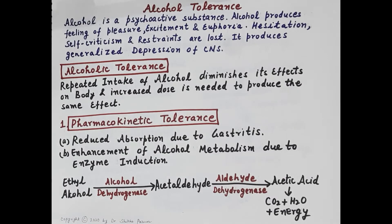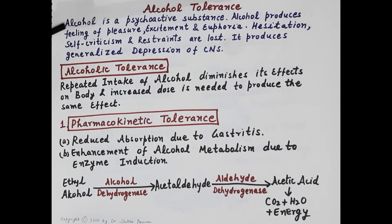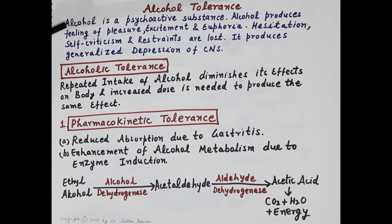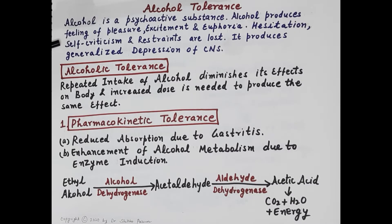Hello students, today we will talk about alcohol tolerance. Alcohol is a psychoactive substance. When alcohol is consumed as per recommendations — not more than one standard drink per day for women and not more than two standard drinks per day for men — it produces a blood alcohol content of 30 to 60 milligrams per deciliter. This limited consumption produces feelings of pleasure, excitement, and euphoria; hesitation, self-criticism, and restraints are lost. It produces generalized depression of the central nervous system.